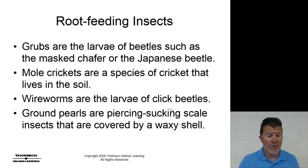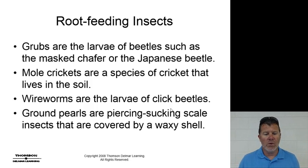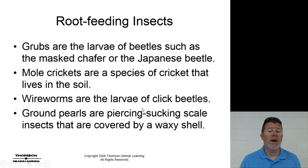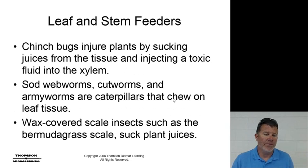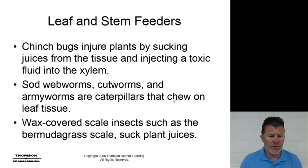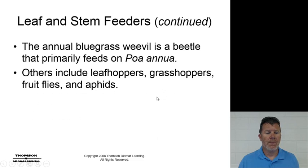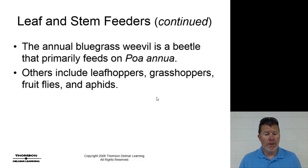Root-feeding insects include grubs — the larvae of beetles such as the masked chafer or the Japanese beetle — mole crickets, which are species of cricket that live in the soil, and wireworms, which are the larvae of click beetles. Ground pearls are piercing-sucking scale insects covered by a waxy shell. Leaf and stem feeders include chinch bugs, which suck juices from tissue and inject toxic compounds into the xylem. Sod webworms, cutworms, and armyworms are caterpillars that chew leaf tissue. Wax-covered scale insects such as the bermudagrass scale suck plant juices. The annual bluegrass weevil is a beetle that primarily feeds on Poa annua. Others include leafhoppers, grasshoppers, fruit flies, and aphids.